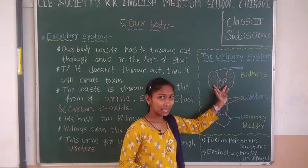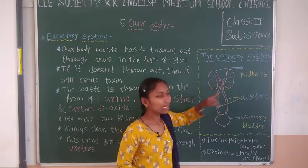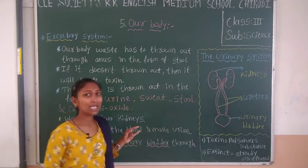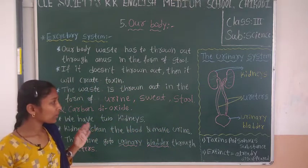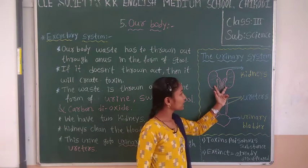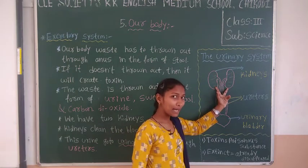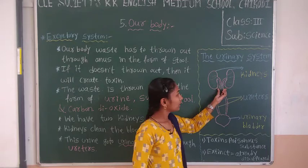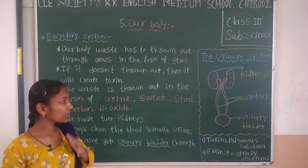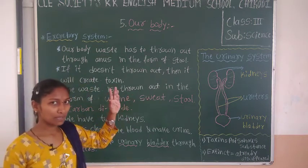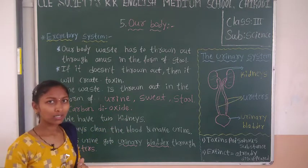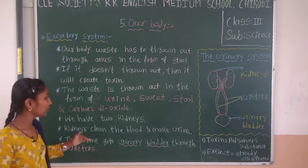Whatever unpurified blood is there, the kidneys convert the waste from it into urine. So the kidney cleans the blood — it purifies the blood — and the waste extracted from the blood is converted into urine. These two kidneys clean the blood and convert the impurities into urine.